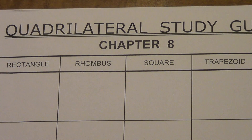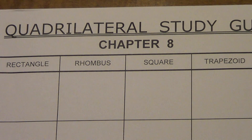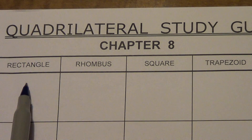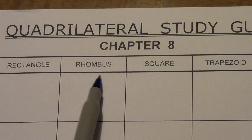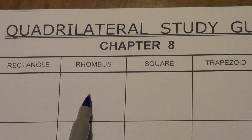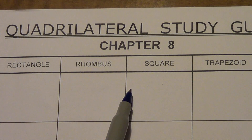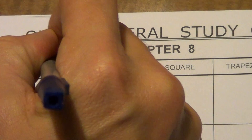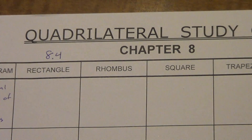We are going to continue with our chapter 8 quadrilateral information, and this video is just going to focus on rectangles. Rectangles and rhombuses and squares are all in lesson 8.4, but I'm going to do three separate videos for them. It should help keep them short. So this is 8.4 and let's start off with a rectangle.